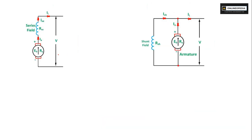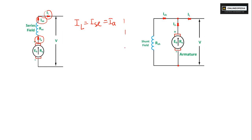Now for series motor, if you look at the circuit carefully, you can find that all currents are equal — that is, IL is equal to Isc is equal to Ia — because all these are in series. So for series motor, the load current equals the series field current equals the armature current.